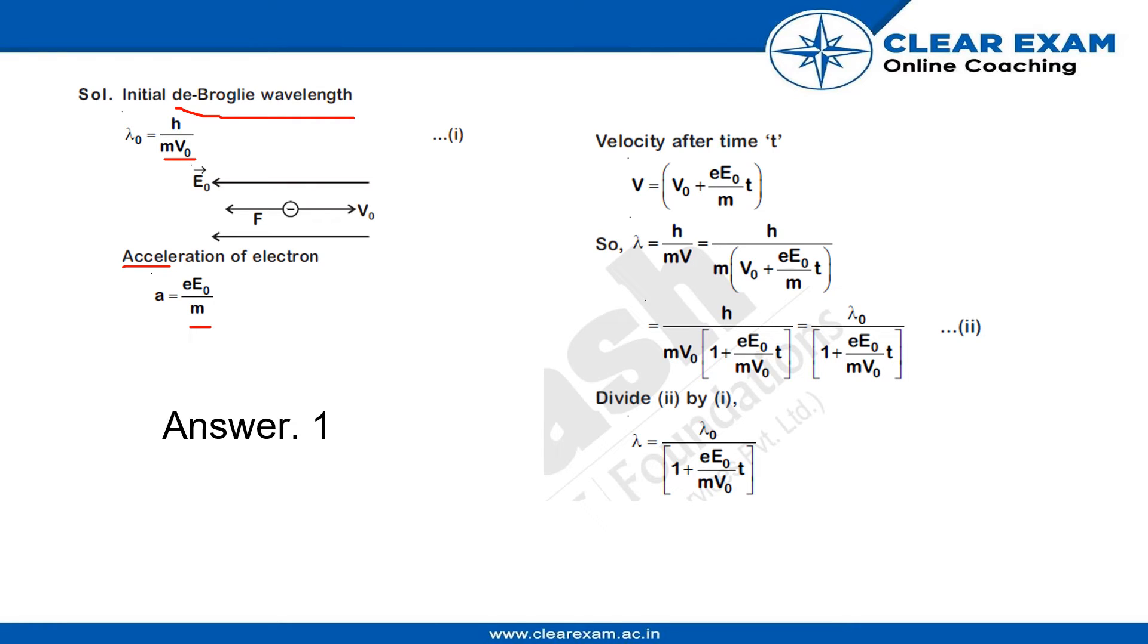Now, the velocity after time t will be v = v₀ + a·t, that is v₀ + (eE₀/m)t. So the wavelength λ will be given by the formula h/(mv).